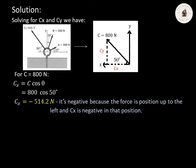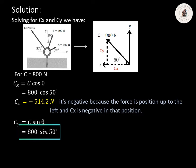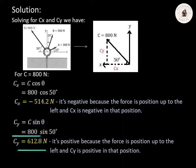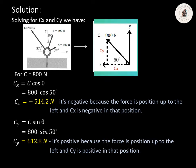Solving for CY: as you can see in the figure, CY is at the opposite side. So CY equals C multiplied by sine theta. C is 800 Newton and theta is 50 degrees, so CY equals 800 multiplied by sine 50 degrees. Using our calculator, CY equals 612.8 Newton. The sign convention is positive because the force is positioned up to the left, and CY is positive in that position.